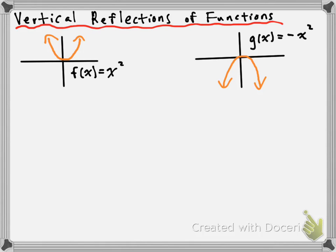Essentially, all you really had to do to get the reflected version is to multiply your function f of x by negative 1. So you just multiply the entire thing by negative 1. That basically means that all the y values that were positive become negative, and all the y values that were negative become positive, which flips the function upside down.